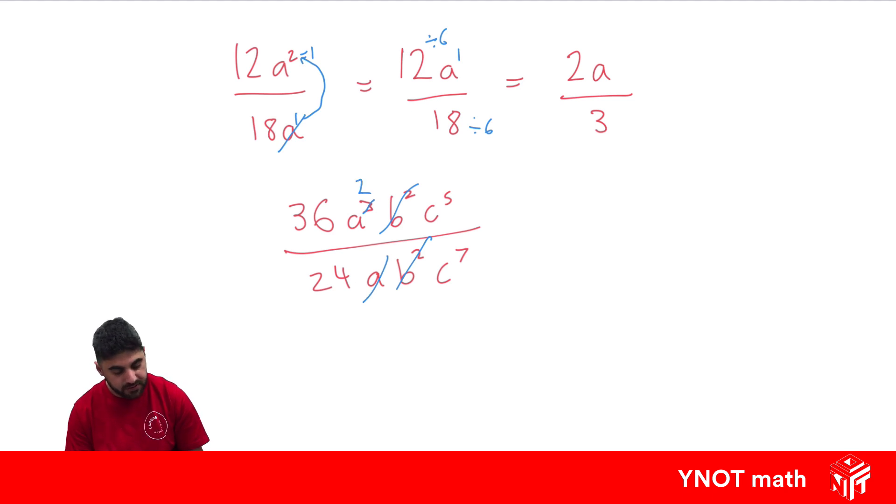Out of the others, c to the power of 5 and c to the power of 7, c to the power of 5 is smaller, so that's gone. And we need to subtract that power from this one, so 7 minus 5 is going to leave it behind 2. Let's just write what we have so far, because it's getting a bit messy.